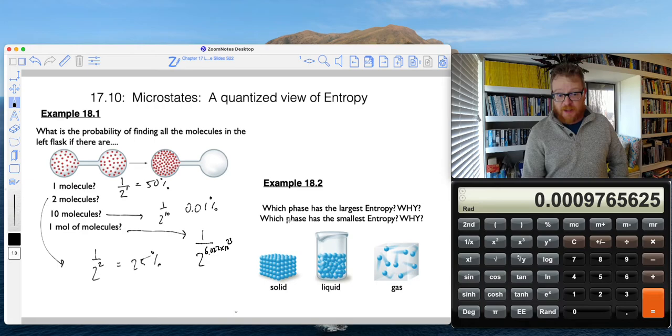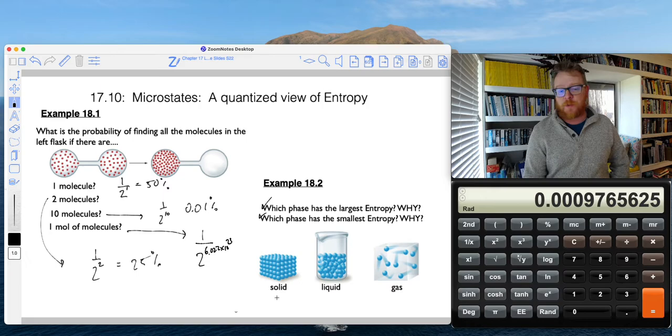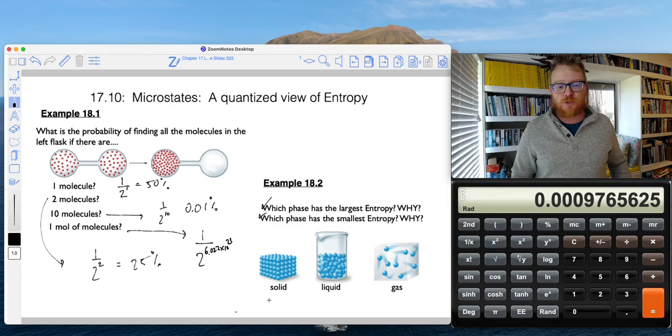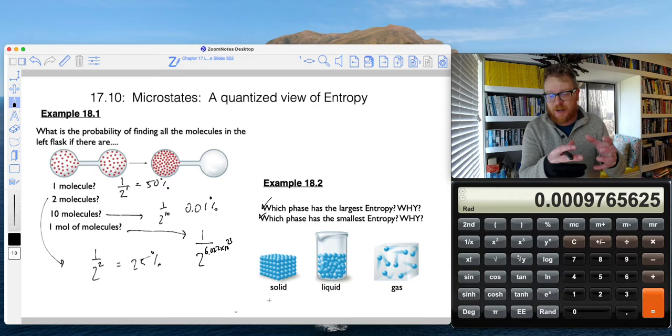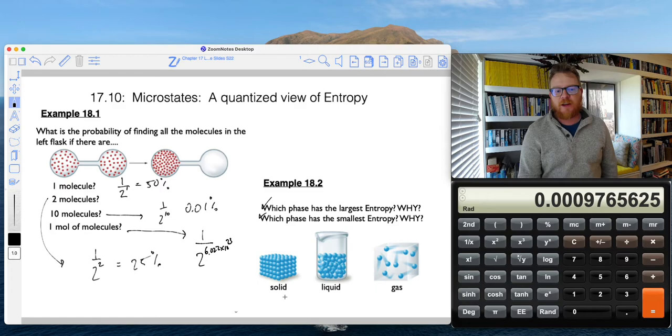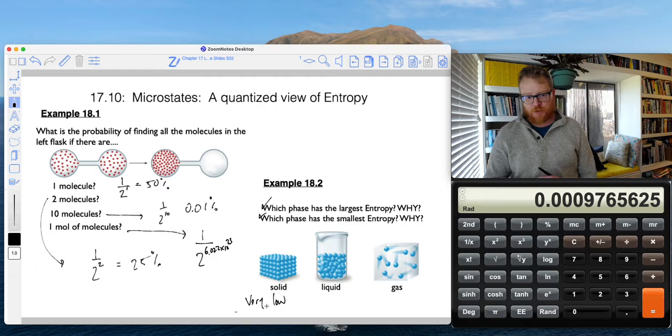So now going back to our phases, we can finally start to think about this, which phase has the largest entropy and why, which phase has the smallest entropy. Well, if we think about this solid, and now that we've studied solids and crystal structures, we recognize when they're packed together in this arrangement and you can't move any of the atoms around because they're packed in, there is very low entropy right here. Very, very low amounts of entropy in a solid.